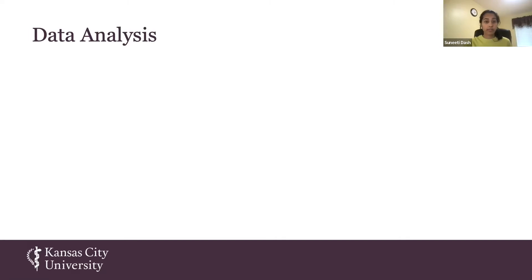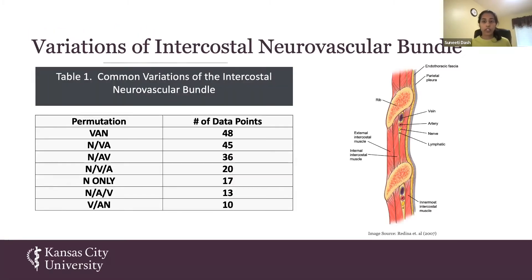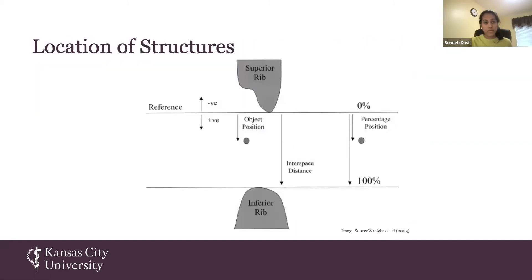For data analysis, we used ImageJ software to measure the distances of intercostal spaces and structures within them. We found a total of 35 variations of the intercostal neurovascular bundle, noting the order from the posterior to the anterior aspect of the rib cage. VAN held true as the most common variation with 48 data points supporting it. We used the 2005 study for reference: structures running within the costal groove received a negative value, while structures running below the costal groove within the intercostal space received a positive value.